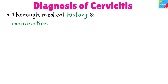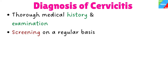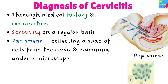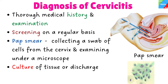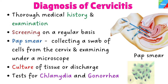The diagnosis of cervicitis is made through thorough medical history evaluation and physical examination. Sexually active teenagers and young adults should be screened on a regular basis. One of the tests done is a pap smear exam that involves collecting a swab of cells from the cervix and examining them under a microscope. A culture of tissue or discharge can be done to determine the type of causative organism, and tests for chlamydia and gonorrhea are also done.